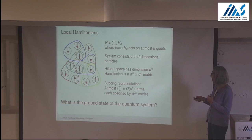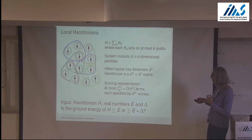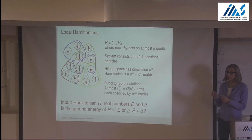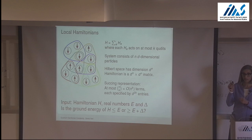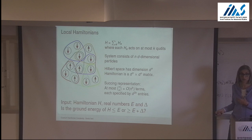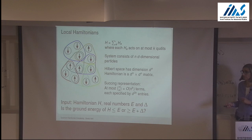The input to our problem is a Hamiltonian expressed in this compact representation, and two real numbers. The question is: is my ground energy less than E, or greater than E plus delta? It's not realistic to compute this energy to very small precision, so we give ourselves a gap — this makes it a nice decision problem and characterizes the complexity of computing the energy relative to some small error.